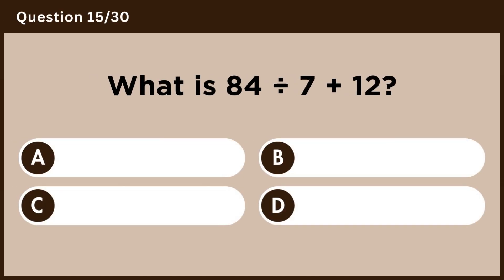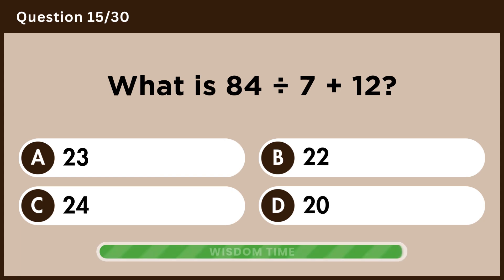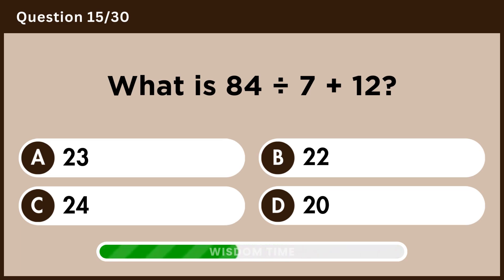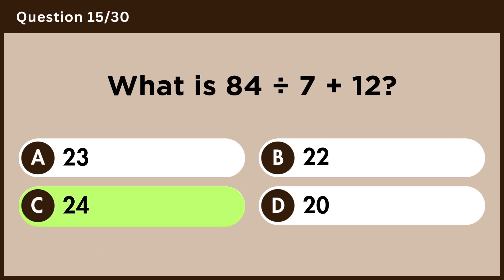What is 84 divided by 7 plus 12? Answer C, 24.